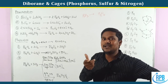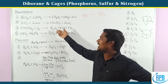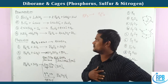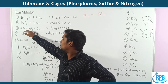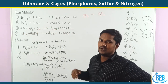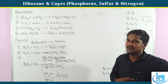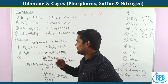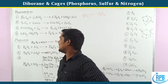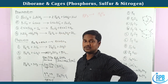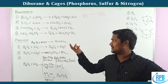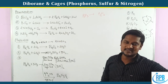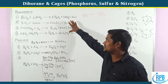Third preparation method: sodium borohydride reacted with iodine gives diborane along with sodium iodide and H2 gas. Diborane is B2H6.